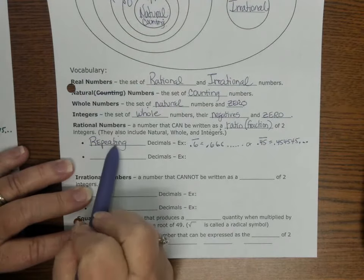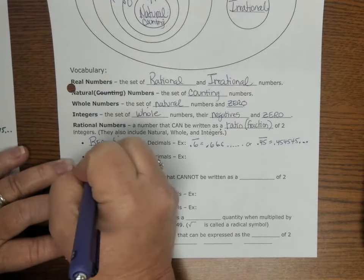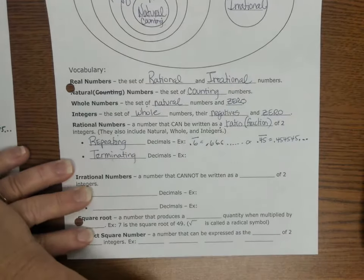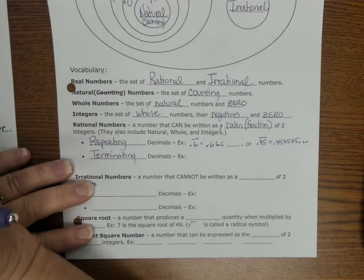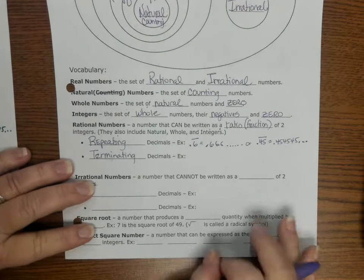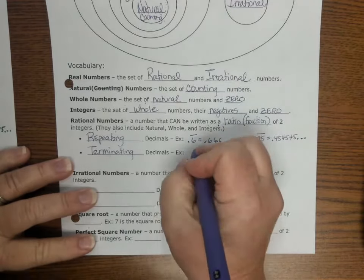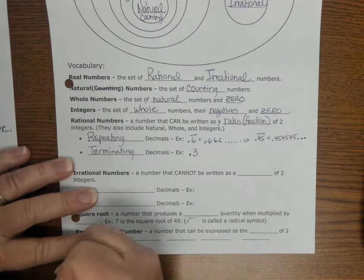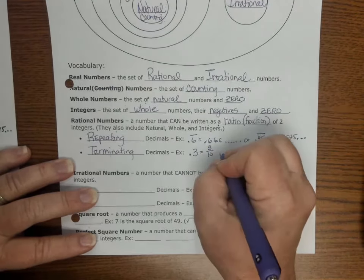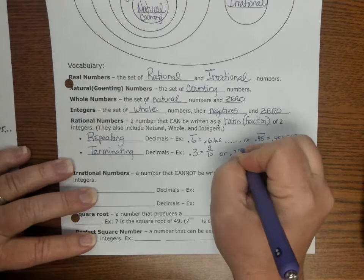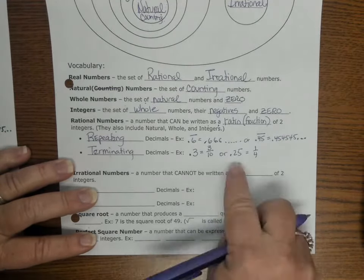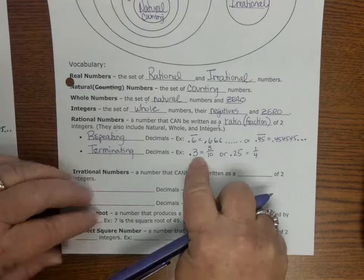So they either have to be repeating, or what we like to call terminating. And terminating, the word terminate, like the terminator, they stop. He kills things, he stops things. So terminating decimals, such as like .3, you can turn that into a fraction by saying 3 tenths, or .25, which is 1 fourth. You can make all of these into fractions.